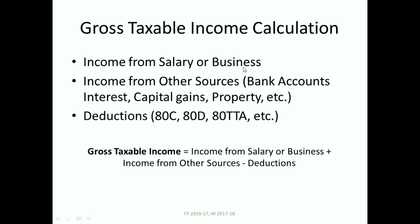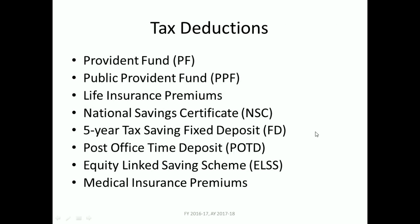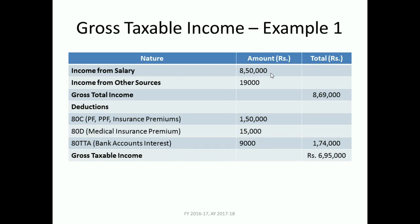The formula for gross taxable income is: income from salary or business, plus income from other sources, minus your deductions for investments made under these sections. There is also a list of various schemes you can invest in to save tax.